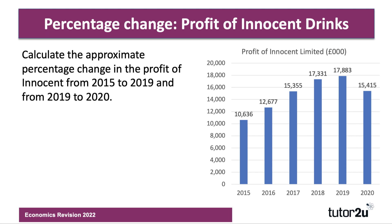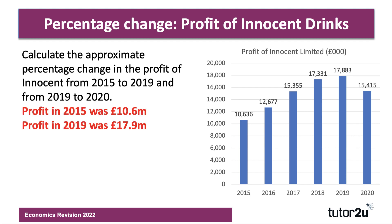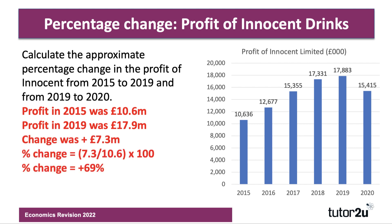Innocent's profits went up from 2015 to 2019. In 2015 they made approximately 10.6 million pounds of profit, rounding down. In 2019 that was 17.9 million, rounding up. The change was plus 7.3 million; divide by the original of 10.6 and multiply by 100. That gives a percentage change of plus 69%.